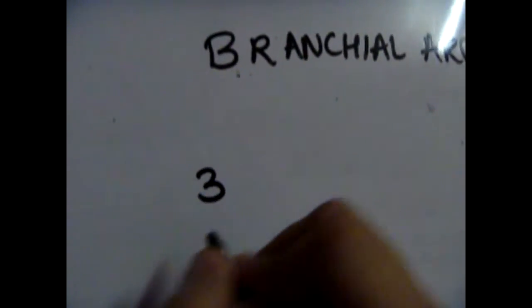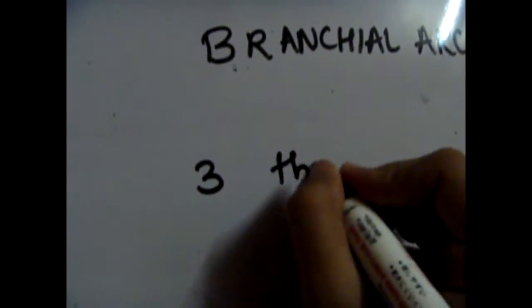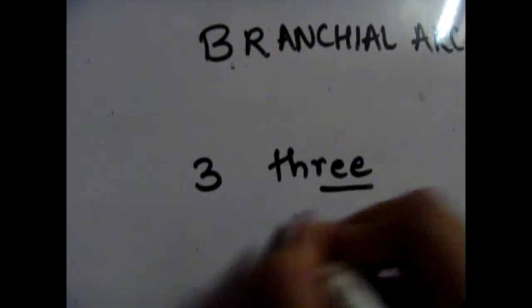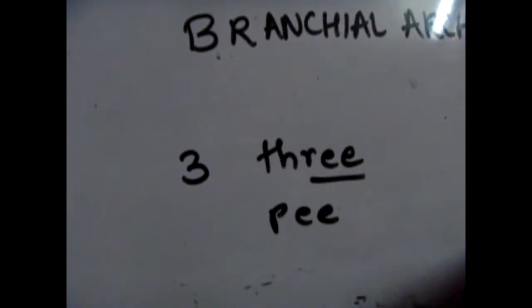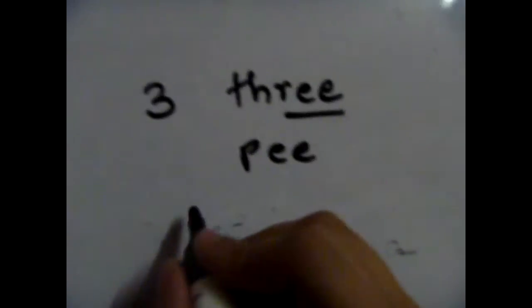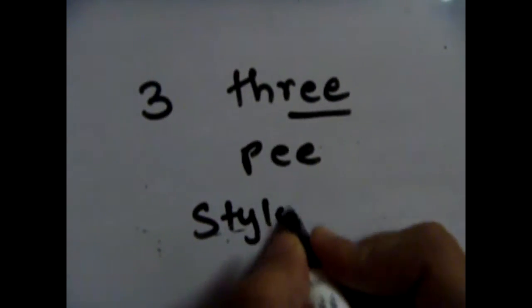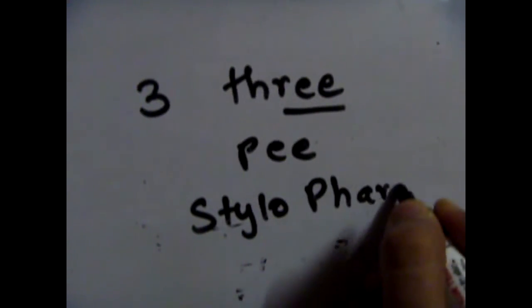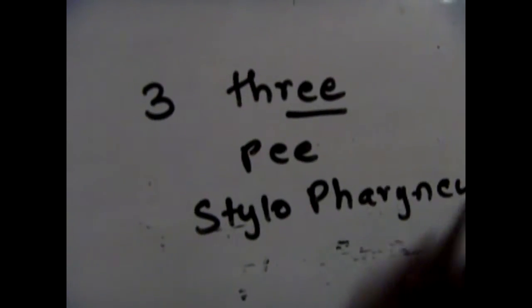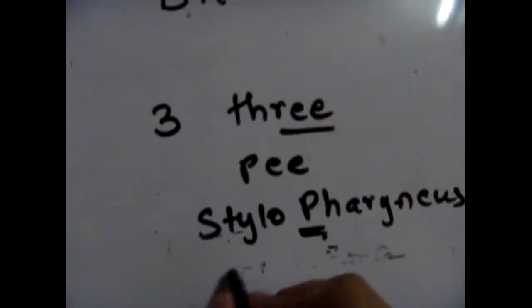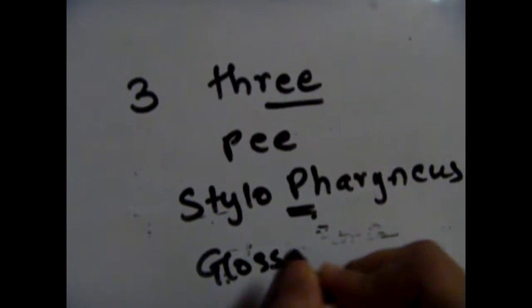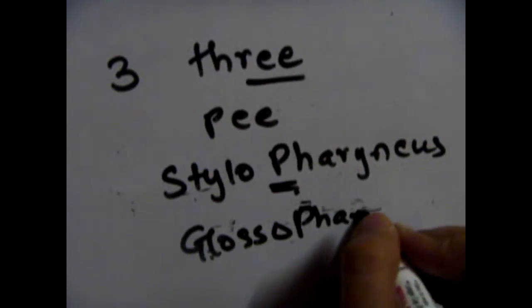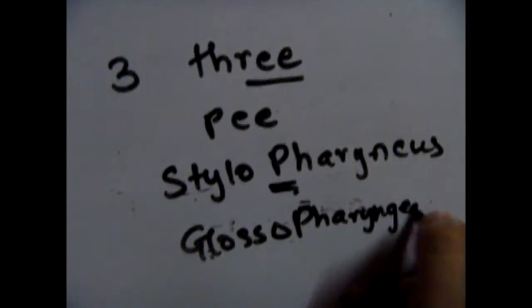Then comes the third branchial arch, and I remember it with the rhyming words three and P. It's a very weird way to remember, but that's how I remember. There is a stylopharyngeus muscle, which has a P, and it is supplied by the glossopharyngeal nerve, which also has a P.